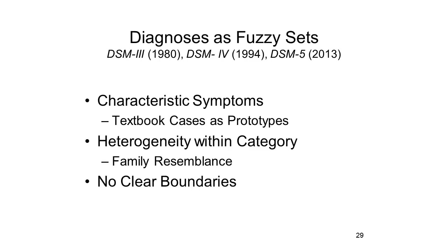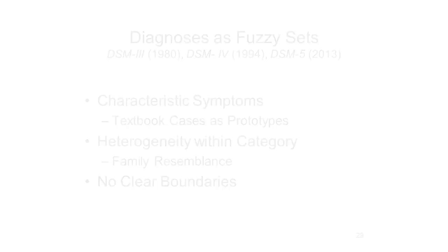Moreover, specific instances of the categories will share a family resemblance, resulting in a great deal of heterogeneity among patients who carry the same diagnosis. Each syndrome may be represented by a kind of prototypical patient who has many, but not necessarily all, of the symptoms that are characteristic of a particular category. This system was continued in the fourth edition of DSM, published in 1994, and the fifth edition, published in 2013.